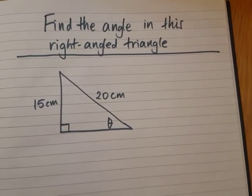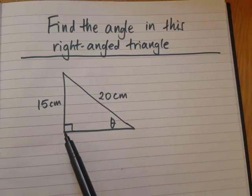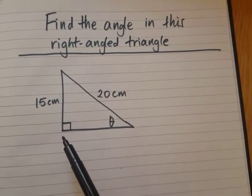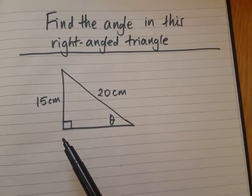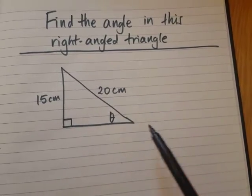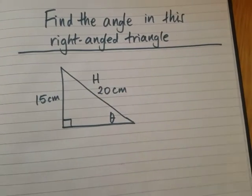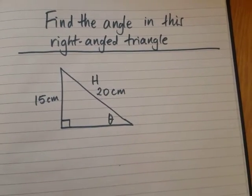So the first thing we're going to do is we notice that it's a right angled triangle. So we should think, let's label our sides. So this side is the hypotenuse. We can see it's the longest side. I'm going to write here H for hypotenuse.